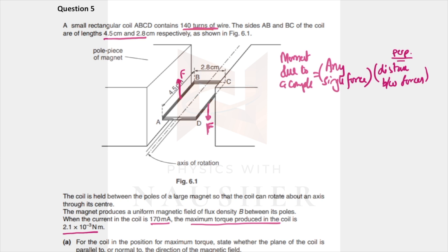Make sure that you do not forget perpendicular. If you find out either this force or this force, any single force, and multiply it by the distance 2.8 centimeters, you should get the moment. They told you that the maximum torque produced is 2.1 times 10 to minus three - they've told you the moment. So you can say 2.1 times 10 to minus three equals F times 2.8 times 10 to minus two, and from here you can find out what the single force F was.